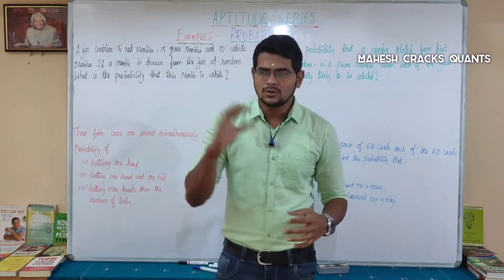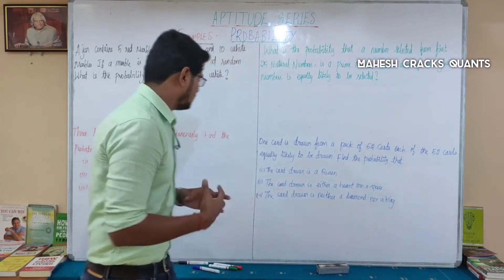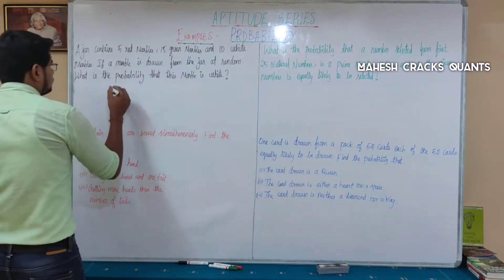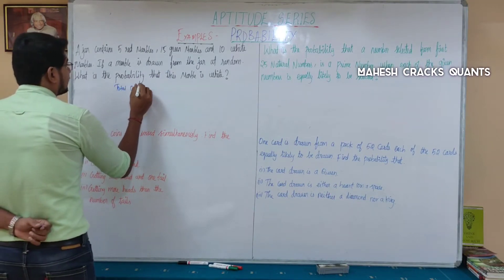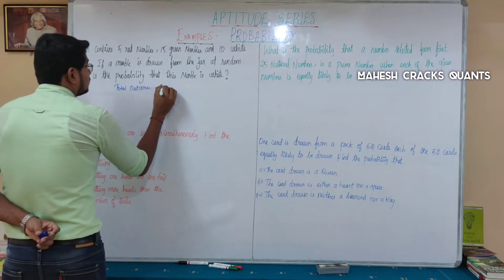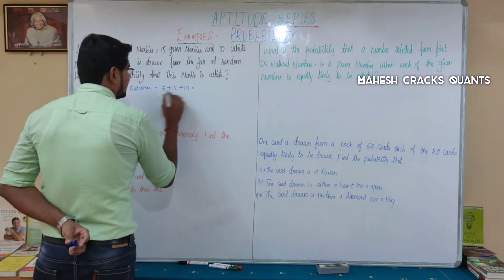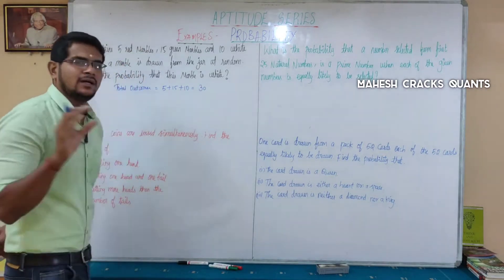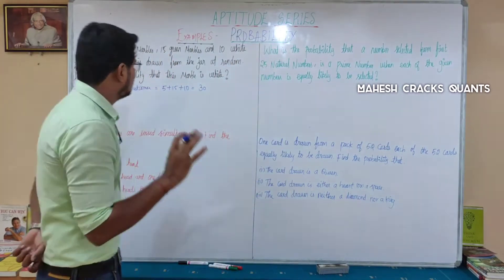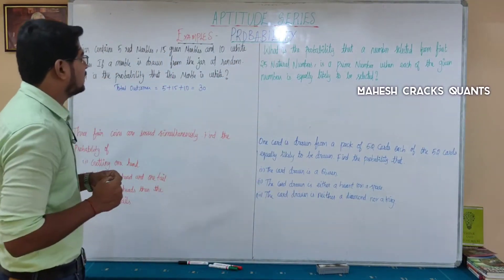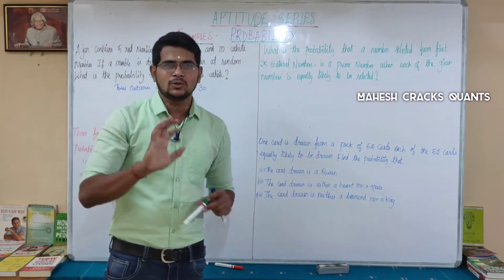If I want to find the probability, I need to look at the total outcome and the favorable outcome. What is the total outcome? 5 plus 15 plus 10, total is 30 marbles. So the total outcome is 30. We use: favorable outcome divided by total outcome.